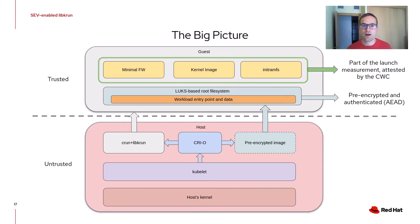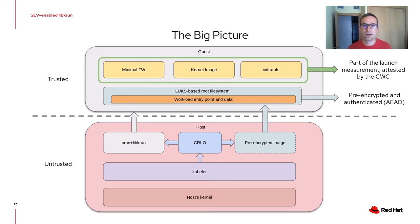For SEV-SMP and TDX, the init ramdisk will also probably include a small attestation client, since attestation no longer happens at the VMM level. From a high-level perspective, the job of this init ramdisk system is to open a LUKS device — potentially using an injected secret — and set up the environment for running the workload entry point. On the bottom side of the big picture, we have the untrusted components: the host kernel, QEMU, and CRI-O, which downloads the pre-encrypted image and starts execution of the confidential workload using CRUN plus libkrun. On the top side, we have the trusted components running inside the guest: the minimal firmware, the kernel image, and the initial ramdisk system — all three are part of the launch measurement and can be remotely attested. We also have the LUKS-based root filesystem, which includes the workload entry point and data, pre-encrypted and decrypted using AEAD.